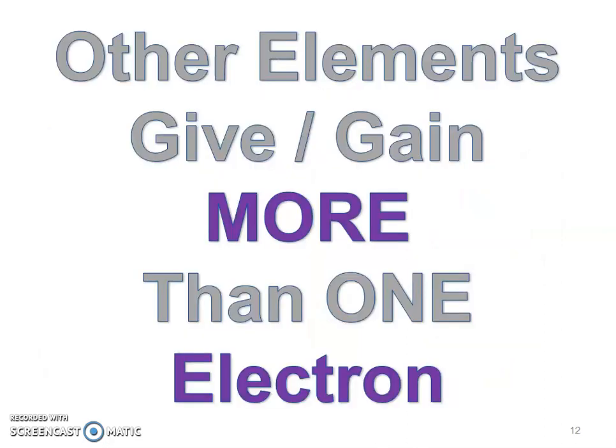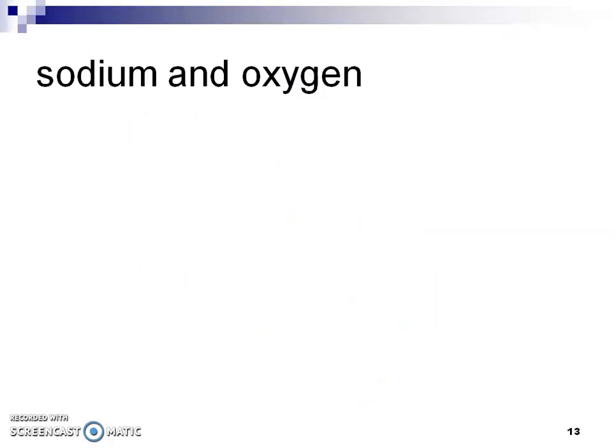We want to remember that elements can give or gain more than one electron, right? You saw that with calcium at the very beginning of this video — it lost two. You saw that with phosphorus. In order for phosphorus to be happy, it's going to have to gain three. So it's not always a one-to-one ratio. Let's see what that looks like.